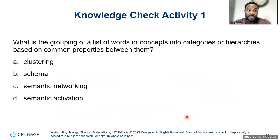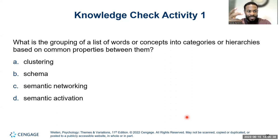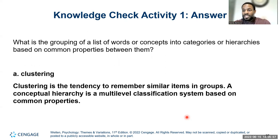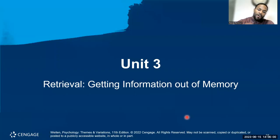Grouping a list of words or concepts into categories or hierarchies based on common properties — that's clustering. Clustering is the tendency to put similar items into groups, while a conceptual hierarchy is a multi-level classification system based on common properties.